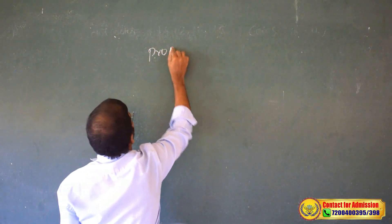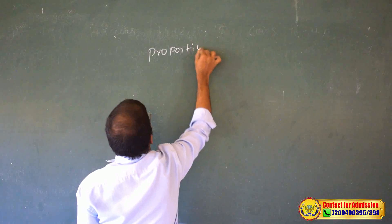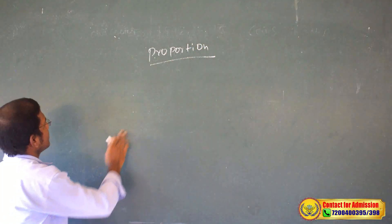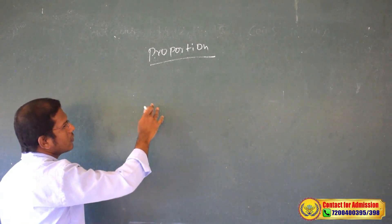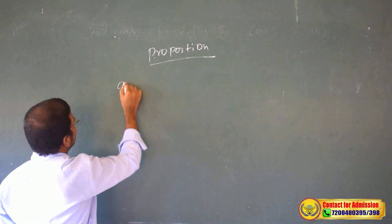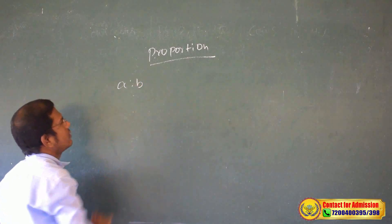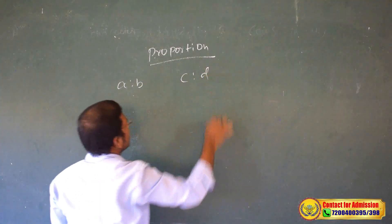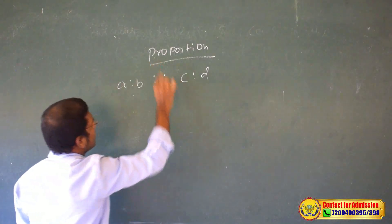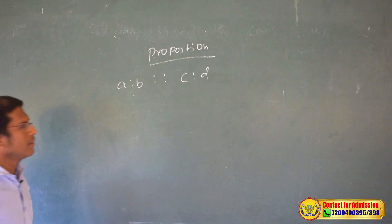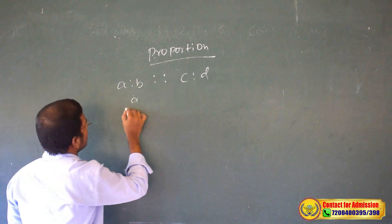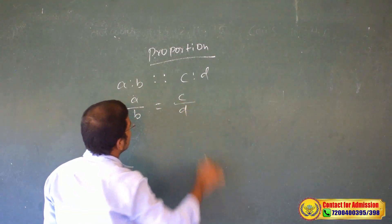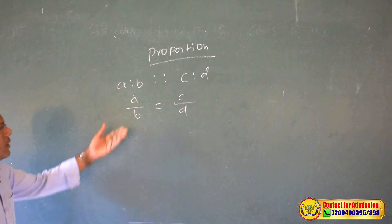Now, what is proportion? If ratio A to B is equal to ratio C to D, that is called proportion. So A by B equals C by D — when two ratios are equal, that is proportion.